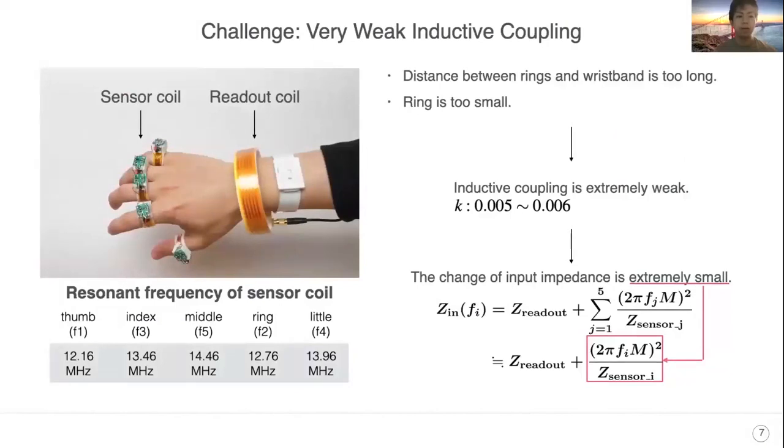However, in our case, the inductive coupling is very weak. So, the change of the input impedance is very small, and previous telemetry cannot detect the sensor change.